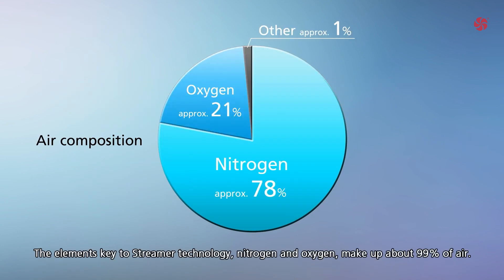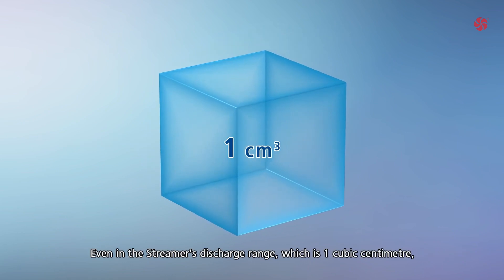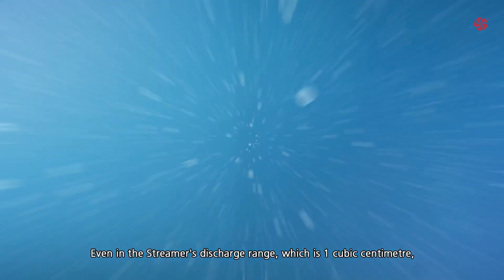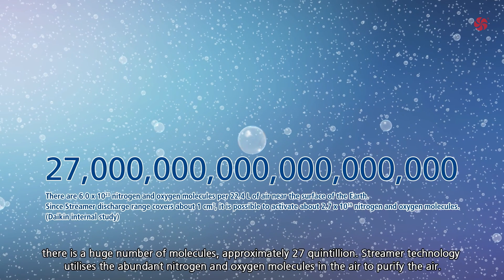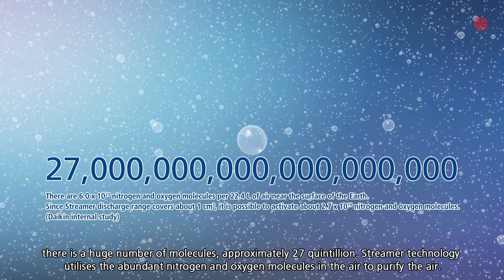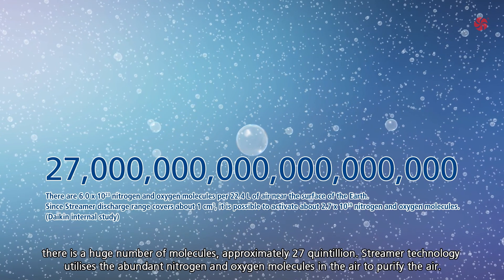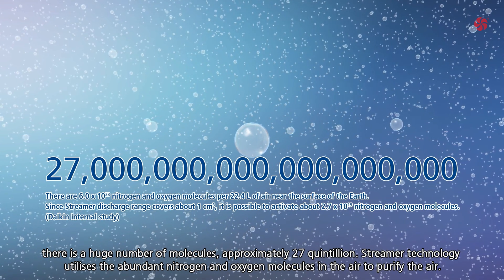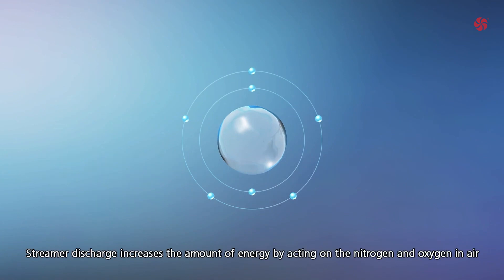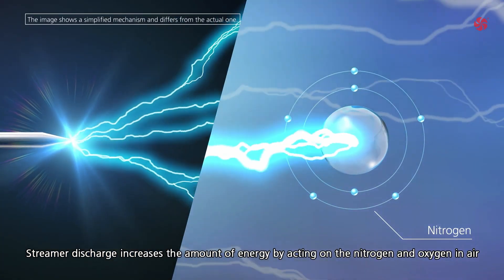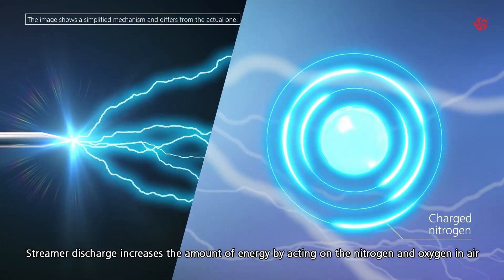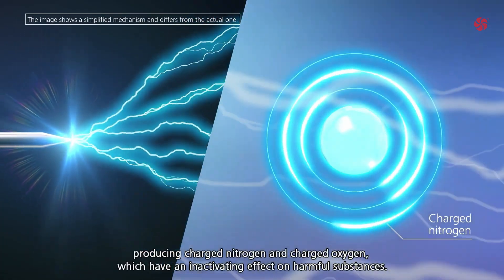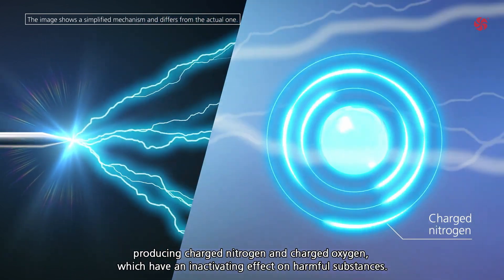The elements key to Streamer technology — nitrogen and oxygen — make up about 99 percent of air. Even in the streamer's discharge range, which is one cubic centimeter, there is a huge number of molecules: approximately 27 quintillion. Streamer technology utilizes the abundant nitrogen and oxygen molecules in the air to purify it. Streamer discharge increases the amount of energy by acting on nitrogen and oxygen, producing charged nitrogen and charged oxygen, which have an inactivating effect on harmful substances.